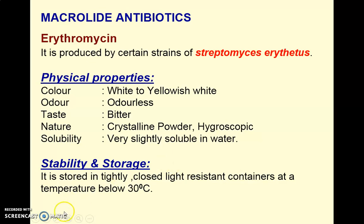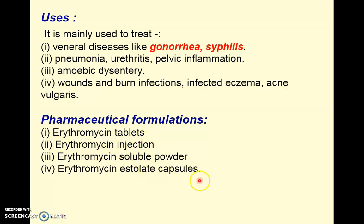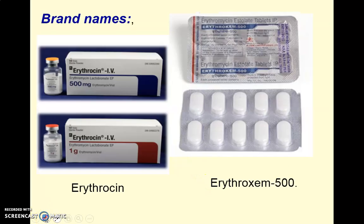Erythromycin is mainly used for diseases like gonorrhea and syphilis, which are sexually transmitted diseases. It is also used in various infections such as pneumonia, urethritis, pelvic infection, amoebic dysentery, wounds and burn infections, infected eczema, and acne vulgaris. The available formulations include erythromycin tablets, injections, soluble powder, and estolate salt capsules. Popular brands include Erythrocin and Erythrozem 500.